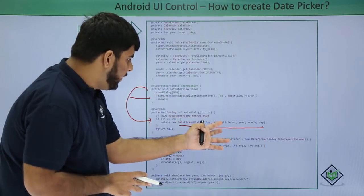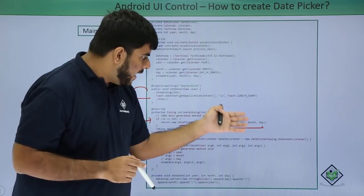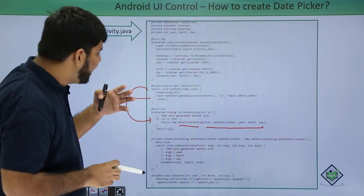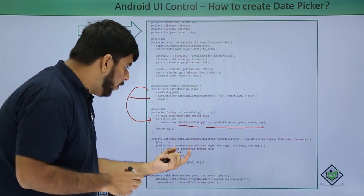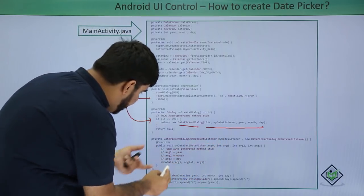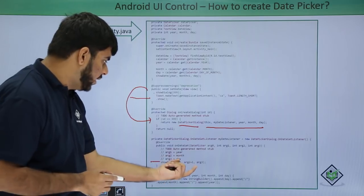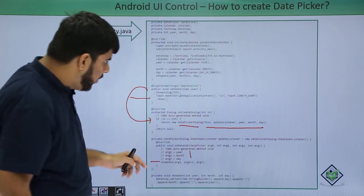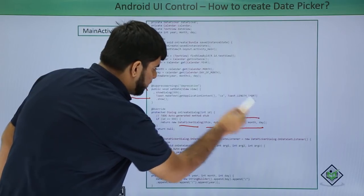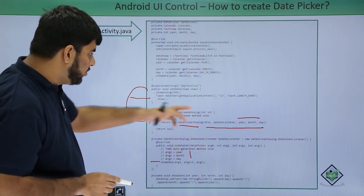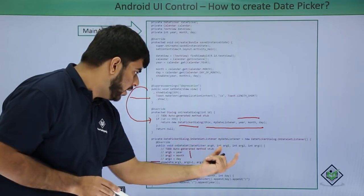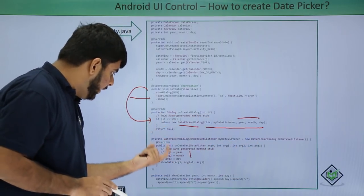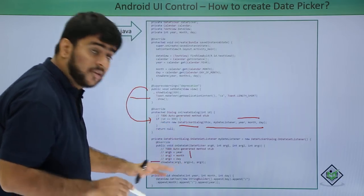The date picker dialog takes these parameters: the date click listener, the year, the month, and the day that are already selected by default. After the dialog is shown, the onDateSetListener is invoked when the user sets a date. We get the selected date — year, month, and day — and call the showDate method with those three values.